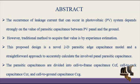The parasitic capacitances are divided into cell-to-frame capacitance Ccf, cell-to-rack capacitance Ccr, and cell-to-ground capacitance Ccg. Based upon that, a pi shape circuit model is derived to predict the leakage current in the PV array.